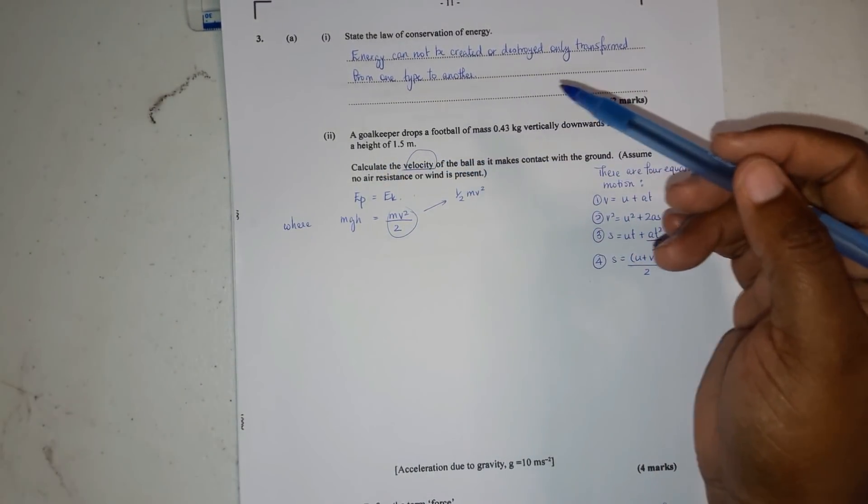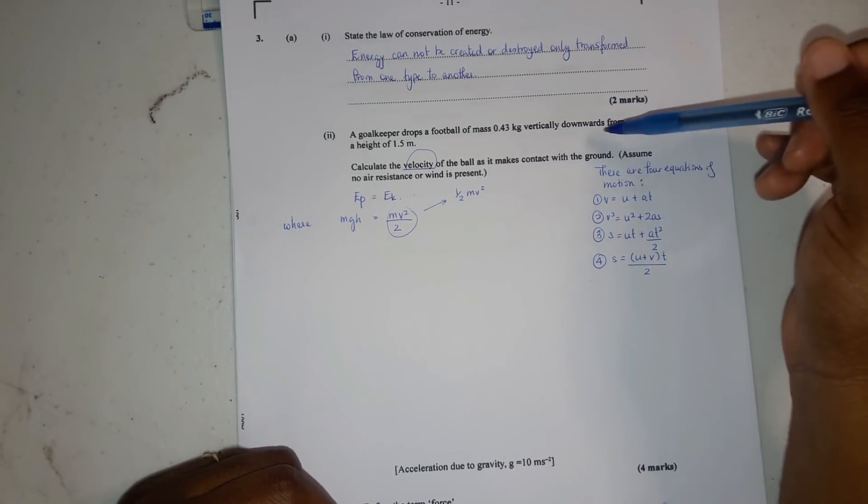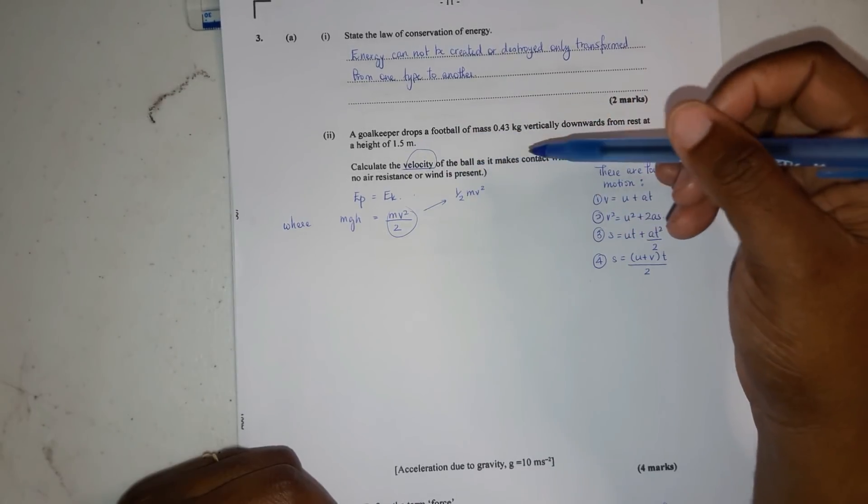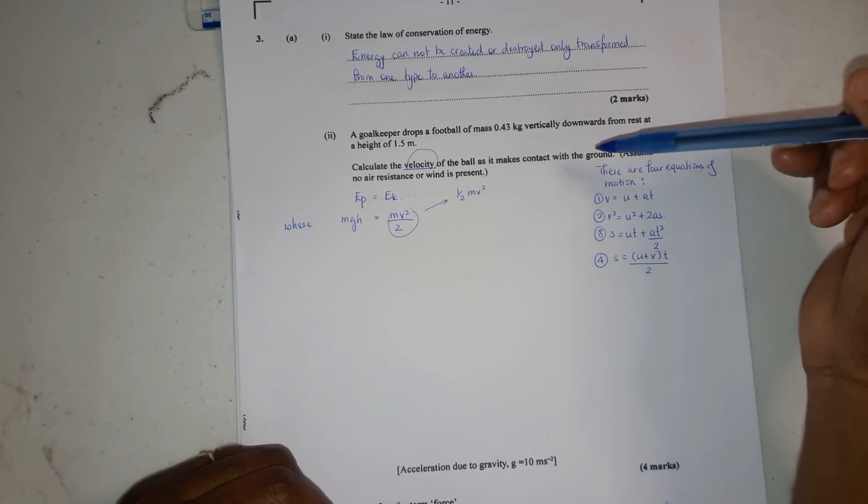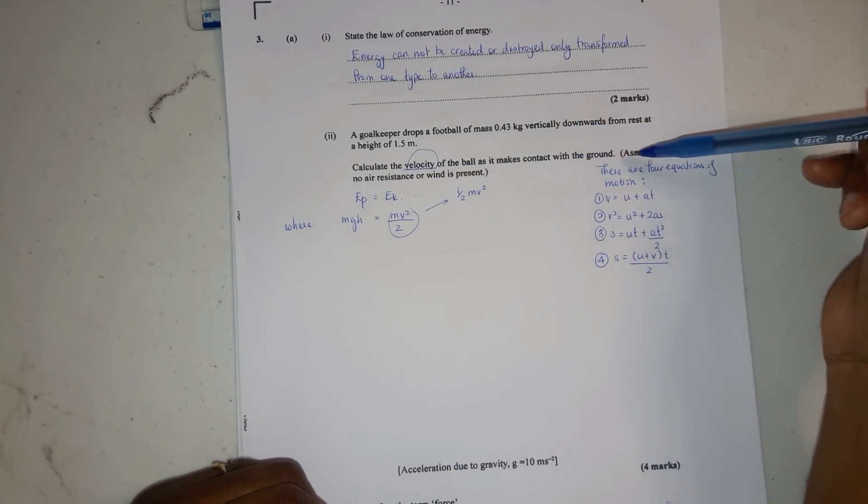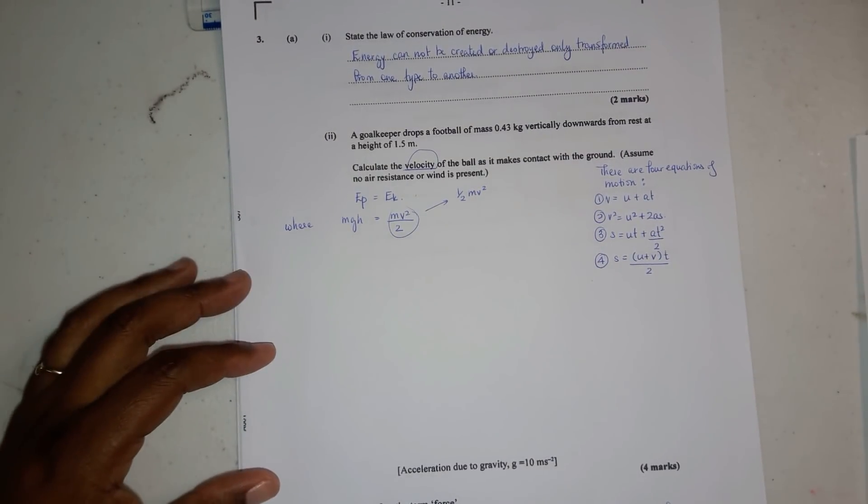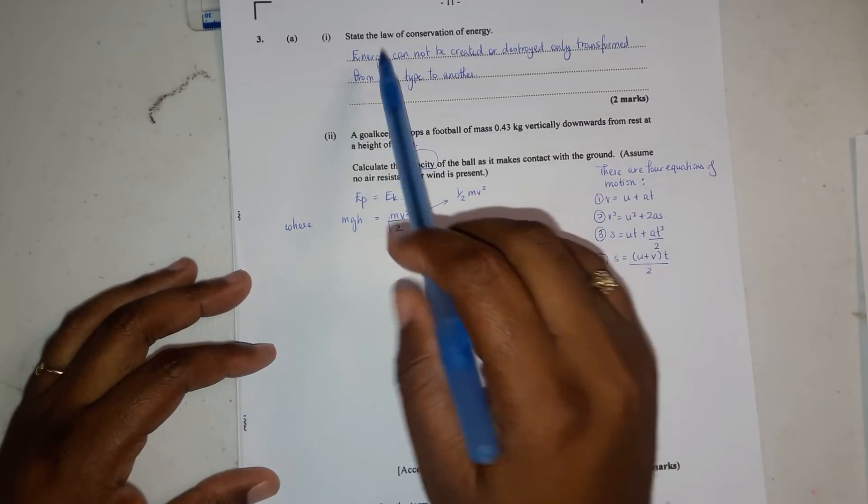A goalkeeper drops a football of mass 0.43 kilograms vertically downwards from rest at a height of one meter. Calculate the velocity of the ball as it makes contact with the ground. Assume no air resistance to slow the fall.